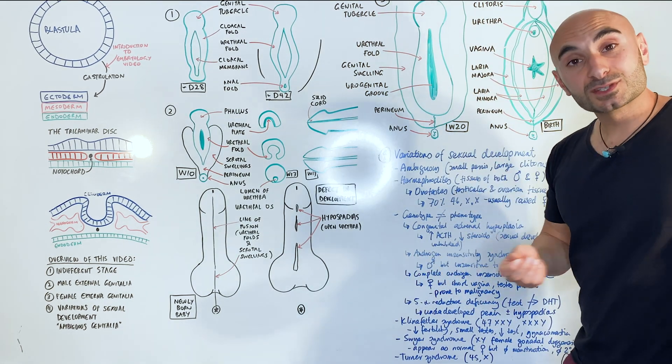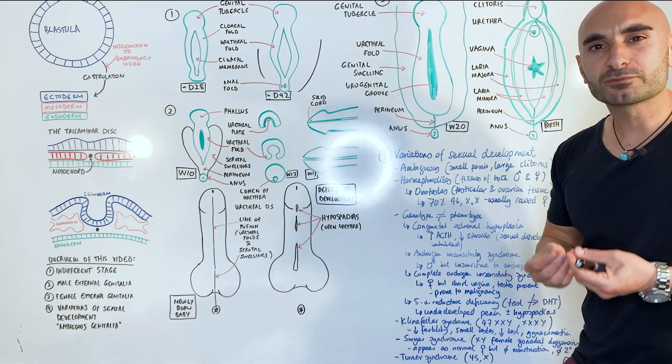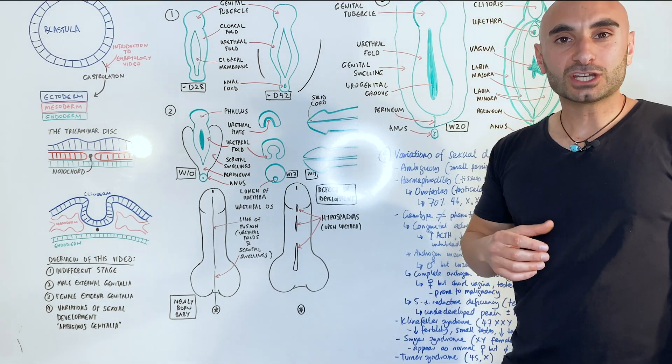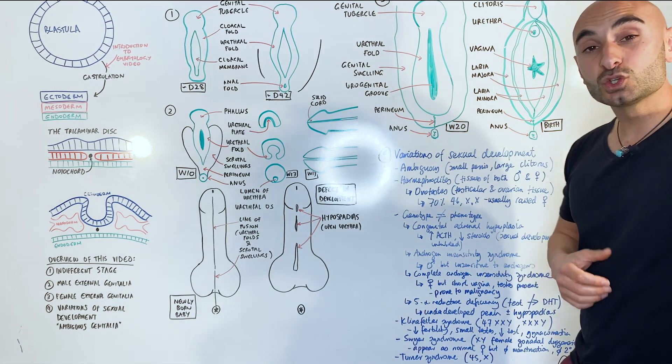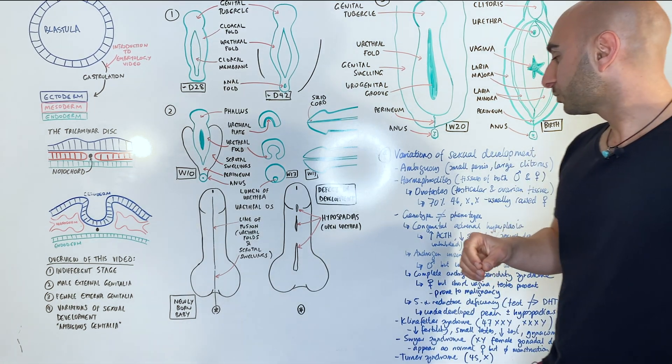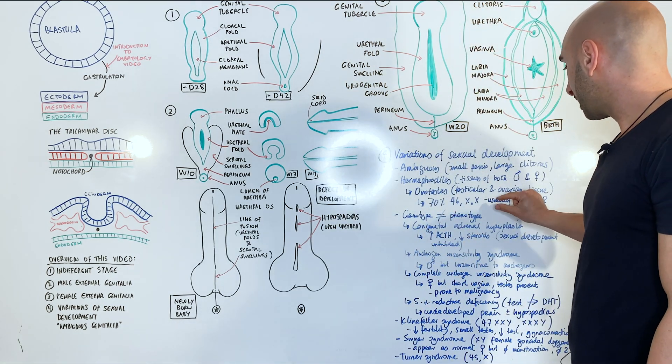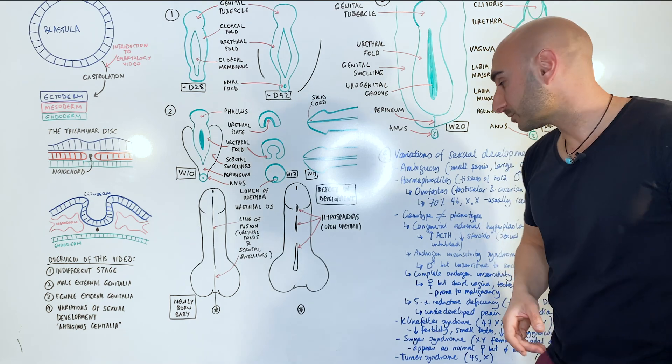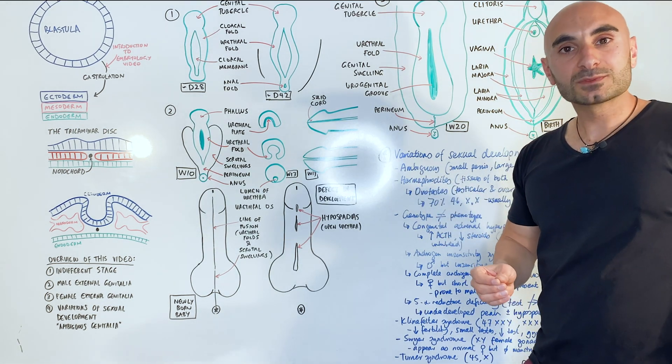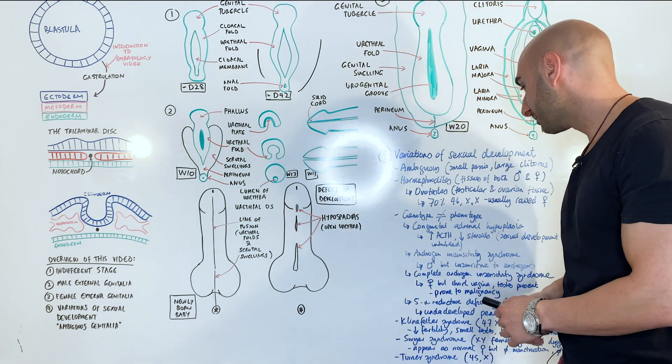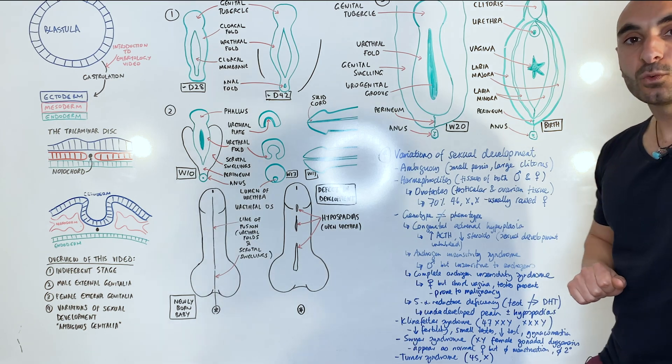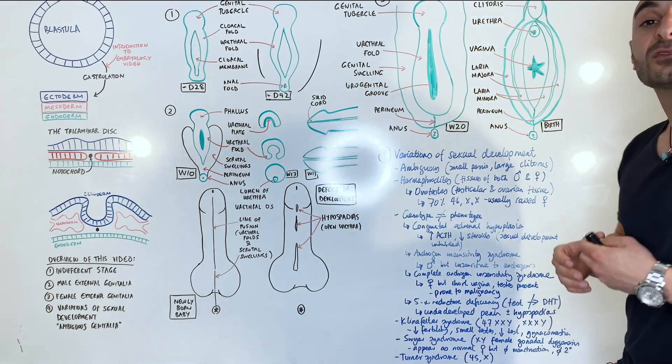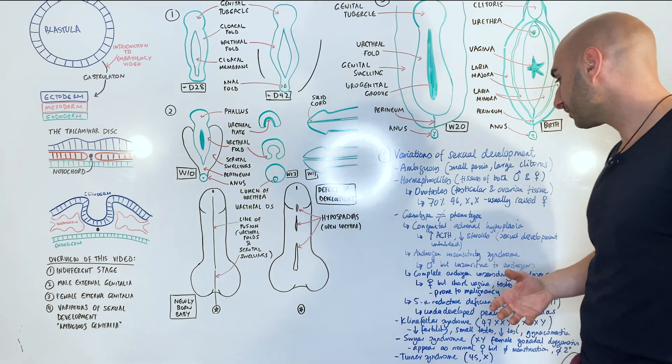What is the closest thing to that is people will have ovo-testes, that's tissues of both ovarian and testicular origin. And these people, 70% of the time, their genotype is 46XX and they're usually raised as females. And people that have ovo-testes can still be confused as to whether they are male or female, but predominantly they will be raised as female. You can have some syndromes where the genotype mismatches with the phenotype, such as the case with congenital adrenal hypoplasia, where you'll have increased production of ACTH and not enough steroid. And so what happens is that the development of the secondary sexual characteristics won't be developed appropriately.